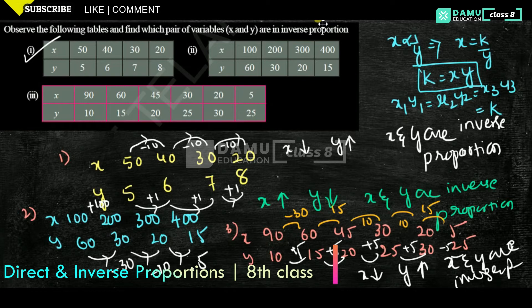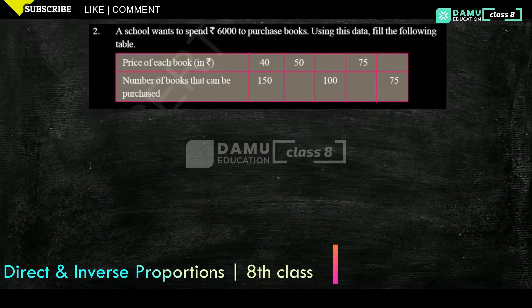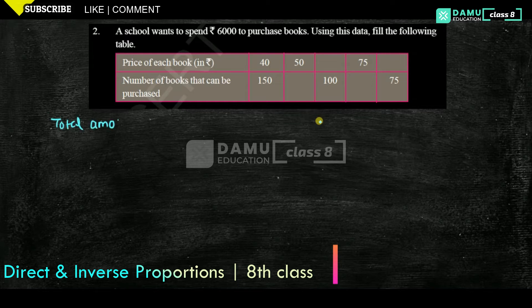So in this module we are going to discuss: a school wants to spend 6,000 rupees to purchase books. Using this data, fill the following table. The total amount to spend for books is 6,000 rupees. The price of each book given is 40 rupees and the number of books that can be purchased is 150.